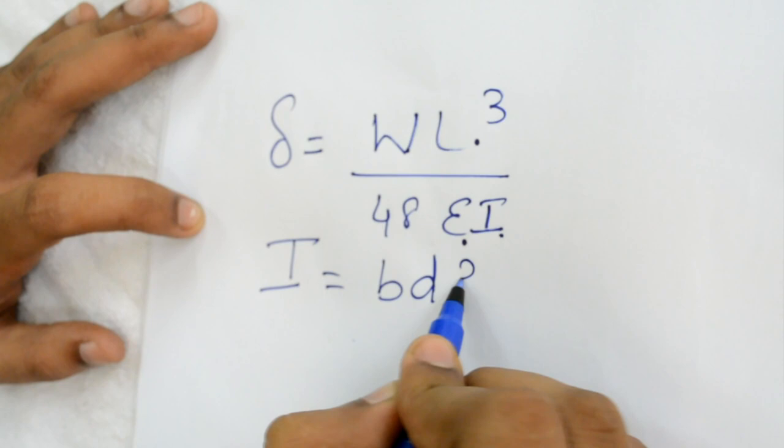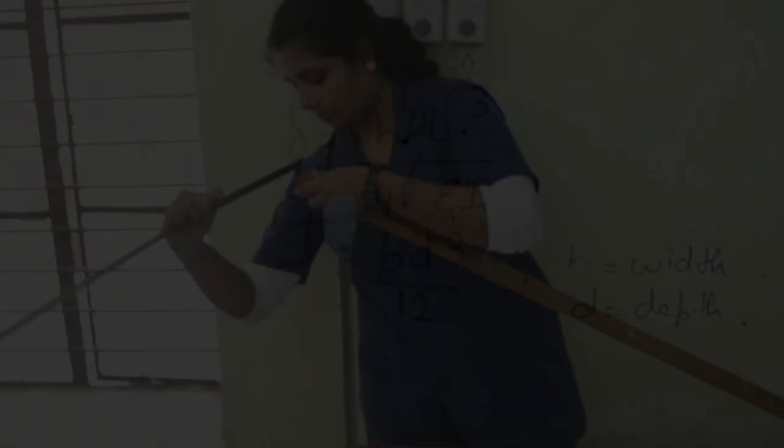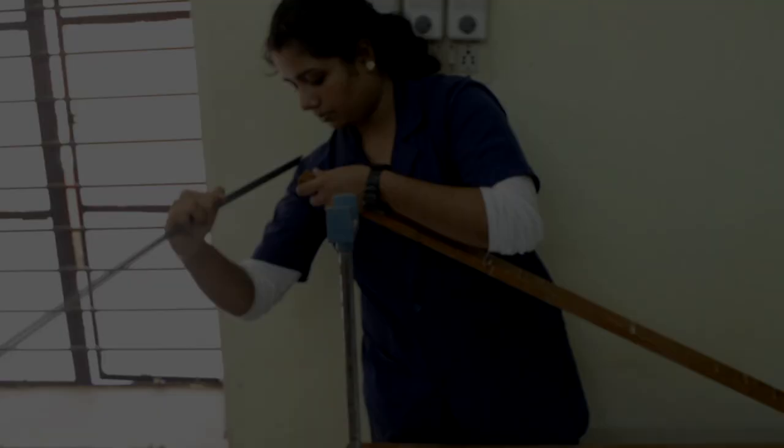I is given by the formula BD cubed by 12, where B is the width of the beam and D is the depth of the beam, which can be measured using a scale. Now from here we will get the moment of inertia.